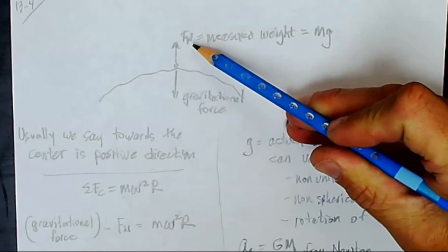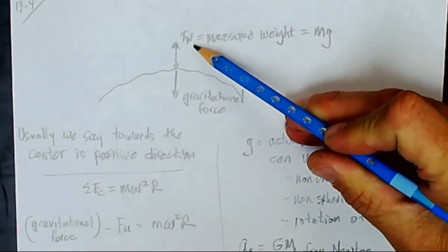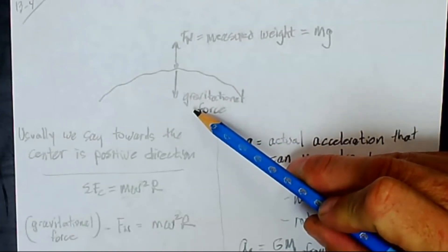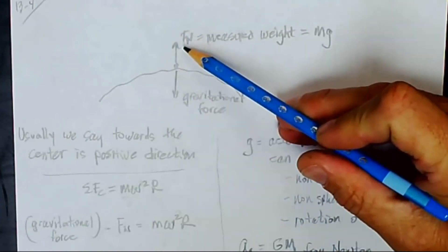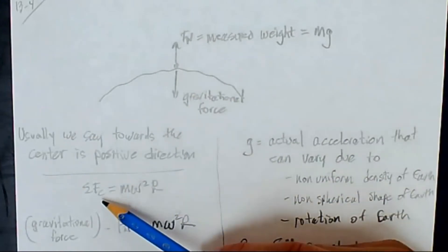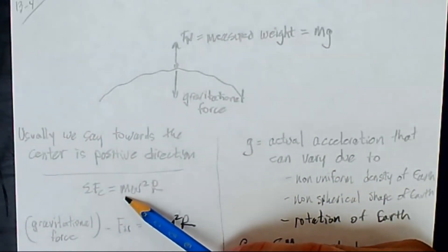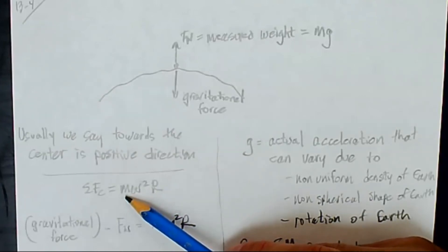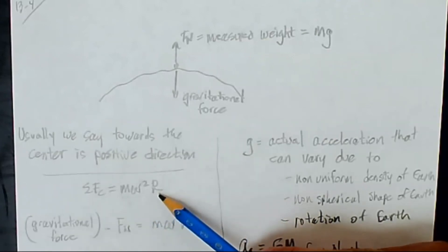So the sum of the normal force, which points away from the center of the Earth, and the gravitational force, which points towards the center of the Earth, the sum of those two will be the centripetal force. So the sum of my centripetal forces is equal to, we're used to saying mv squared over r for mass times centripetal acceleration, but don't forget, it's also equal to mass times r times omega squared, where omega is the angular velocity and r is the radius of the curvature.